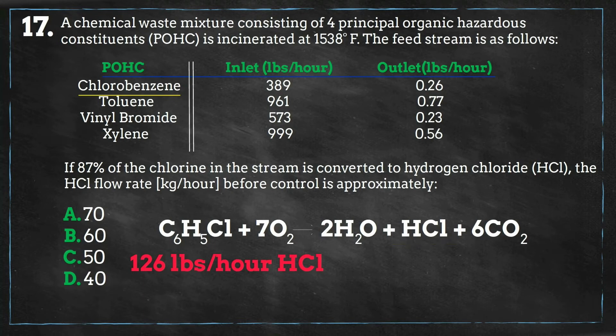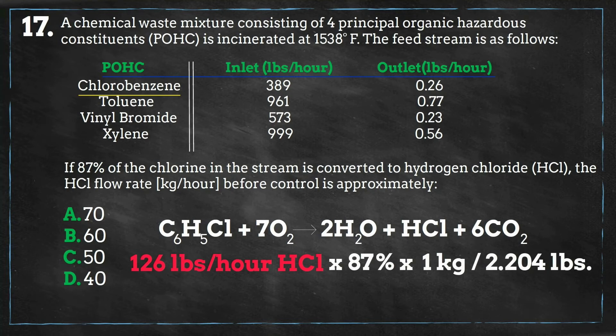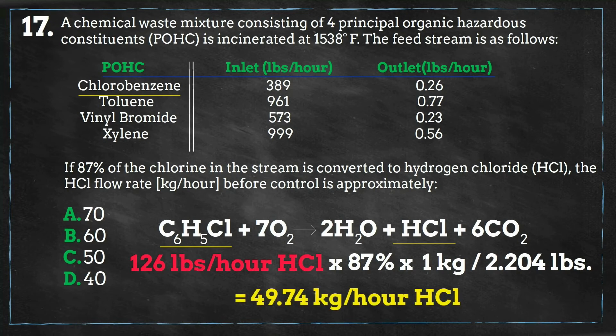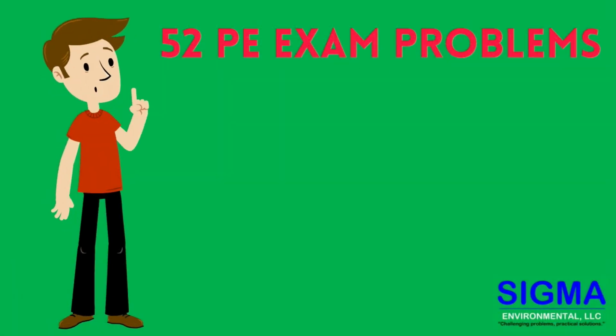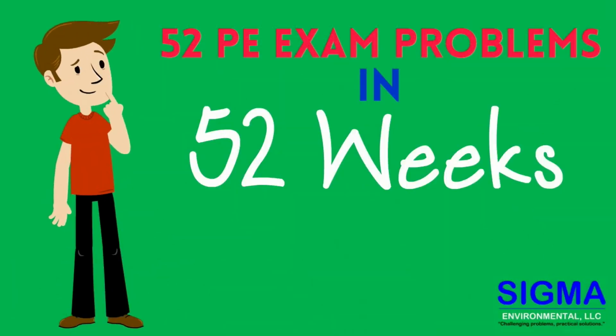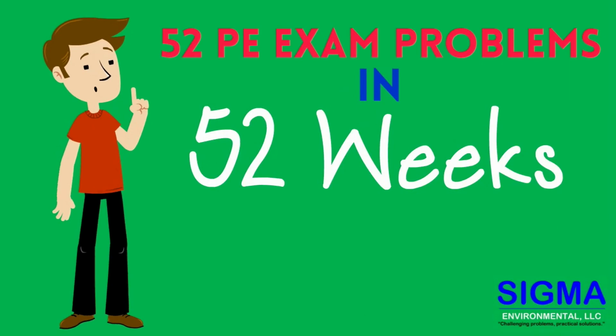Remember that the problem states only 87% of the chlorobenzene will convert to hydrogen chloride, and that the answer is to be given in kilograms per hour. Making these conversions, we get an answer of 49.74 kilograms per hour, which is closest to answer C. Join us for episode 18 of 52 PE exam problems in 52 weeks.